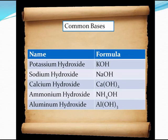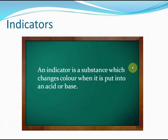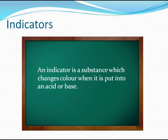Now before we study the properties of acids and bases, we have to learn about a special term called indicators. An indicator is a substance which changes color when it is put into an acid or base. So in any reaction, if an acid or a base is formed, we come to know by means of an indicator. The indicator has one color in an acid, one color in a base, and maybe yet another color in a salt — it tells us whether a solution is acidic or basic.